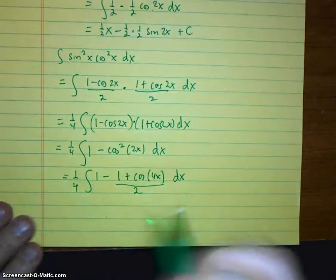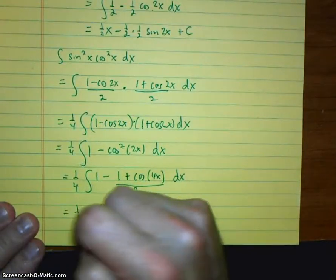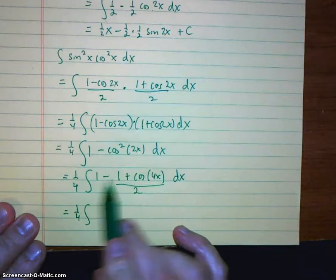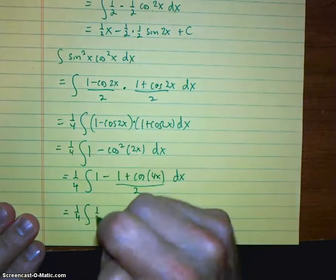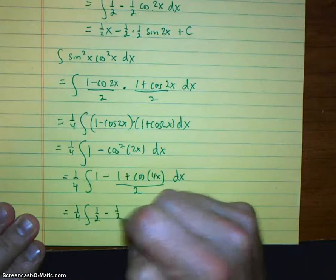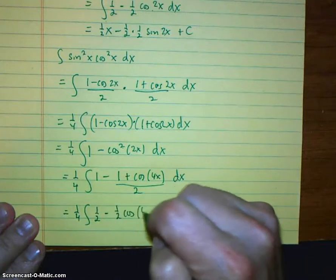All right, so just a small amount of little algebra here. And then we'll integrate. So again, I'm going to split this. This is going to be 1 minus 1 half. That's 1 half. Minus 1 half cosine 4x dx.